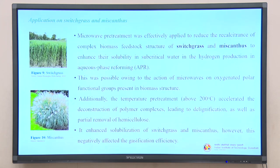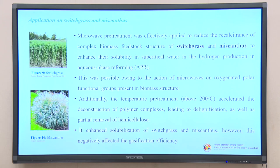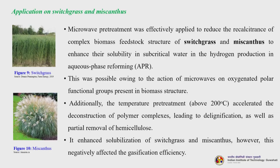Microwave pretreatment was effectively applied to reduce the recalcitrance of switchgrass and miscanthus to enhance their solubility in subcritical water for hydrogen production in aqueous phase reforming. This was due to the action of microwaves and oxygenated polar functional groups present in the biomass structure. Temperature pretreatment above 200 degrees centigrade accelerated the deconstruction of polymer complexes leading to delignification as well as partial removal of hemicellulose, enhancing solubilization of switchgrass and miscanthus; however, this negatively affected the gasification efficiency.